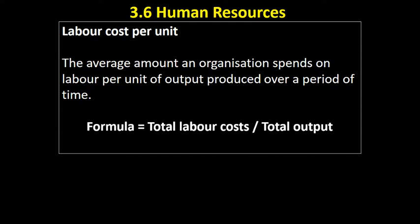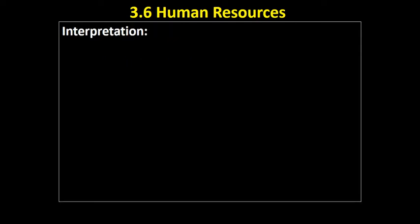So how do we interpret that? Well there's a clear link to labour productivity. The more each member of staff is doing in an hour, the more units that they're producing in an hour, the more efficient they're being, the lower the average cost of producing each unit will be, presuming that you are paying them by the hour rather than per unit.